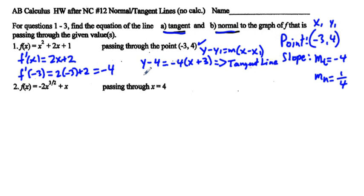And then our normal line equation, I'm going to write right below it, we're going to say y - 4. So our normal line equation is going to be the same as the tangent line equation in every respect except for the slope. So instead of writing -4, we put one-fourth quantity (x + 3). And so that would be a normal line.